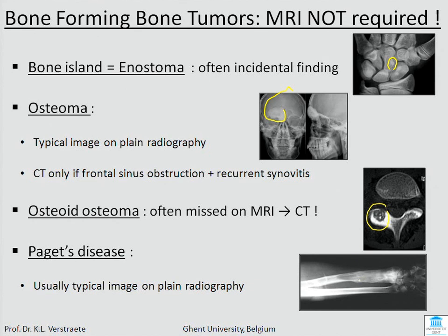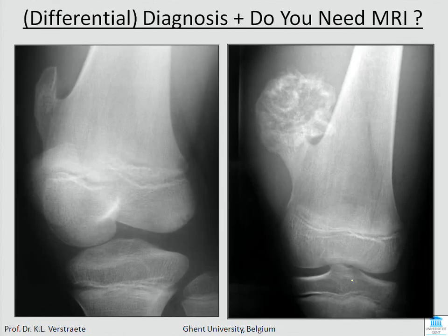The last one was Paget's disease. In the first phase of Paget's disease you have osteoporosis circumscripta, which means it starts with osteoporosis and later on it becomes more white with more calcifications. So this diagnosis you make on X-ray.